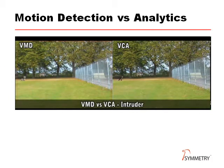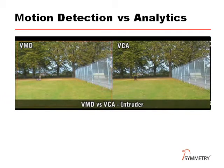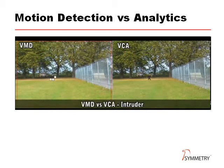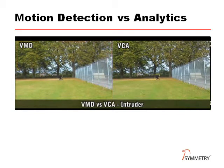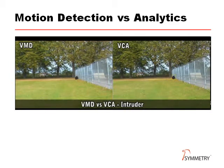The VCA image locks on to the target and tracks it reliably across the screen, once again demonstrating how it can identify and follow a specific object despite background movement.